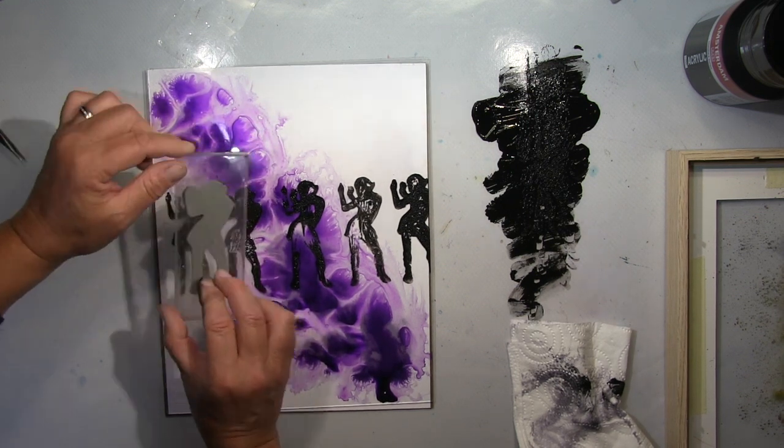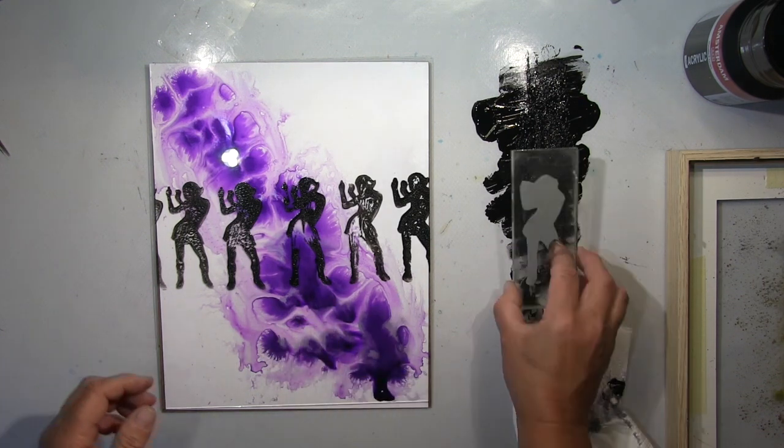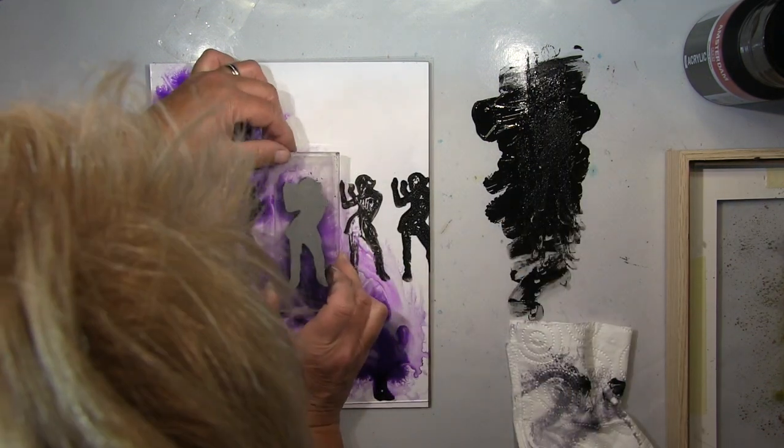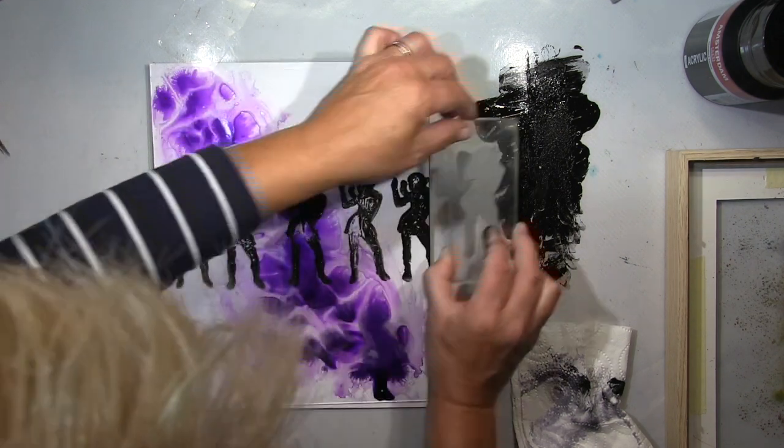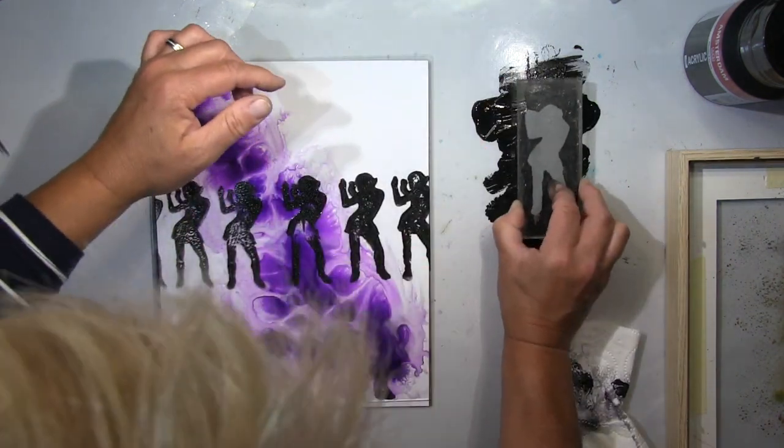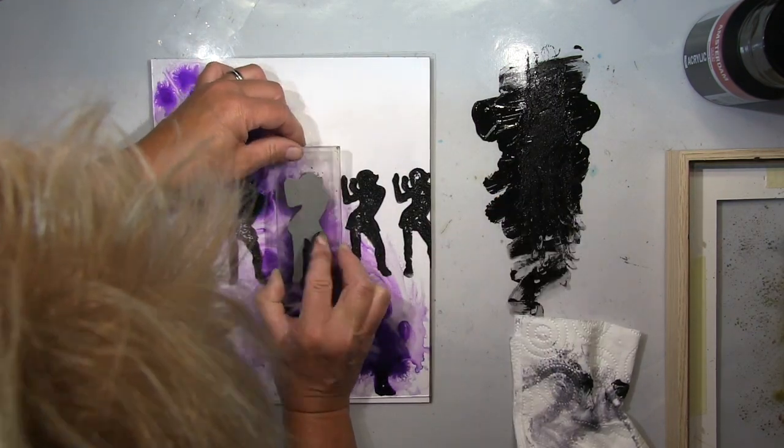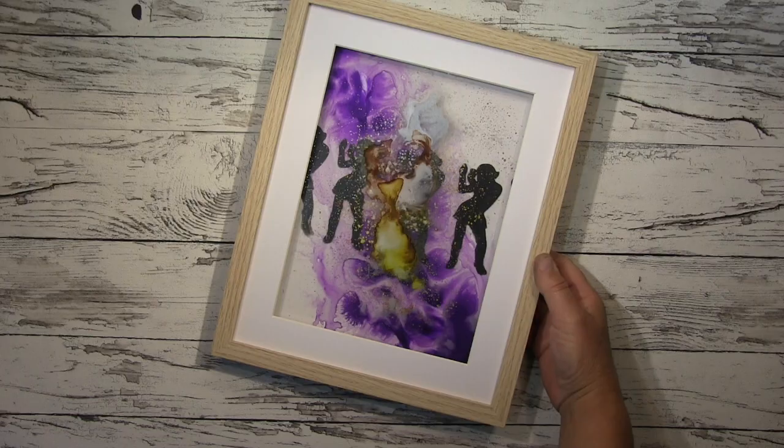As you can see, it's a bit difficult to stamp with acrylic paint on glass because it lifts the paint up again. But it doesn't matter. Everything, I will go over everything afterwards with brush and fill it up again. That's not a problem because it's a silhouette. So I'm pretty cool with that. Not a problem.